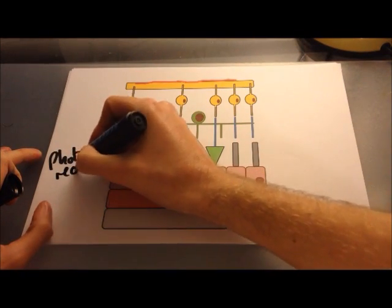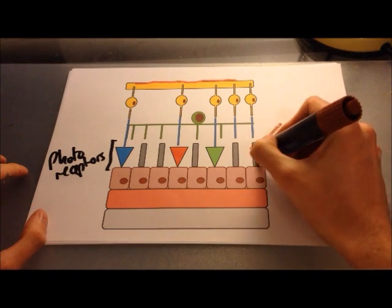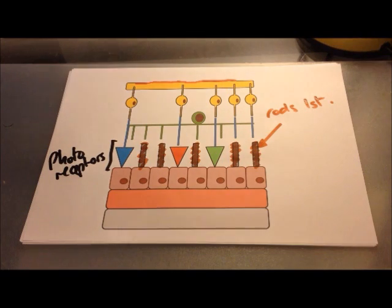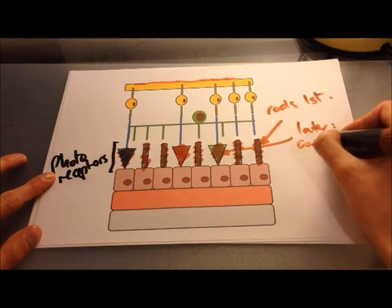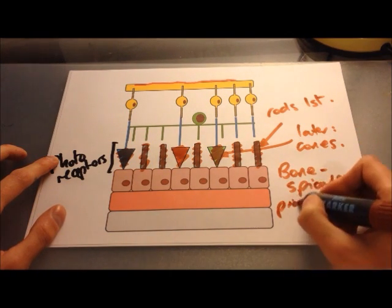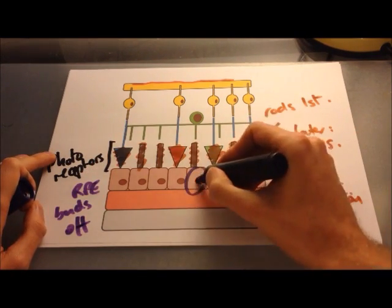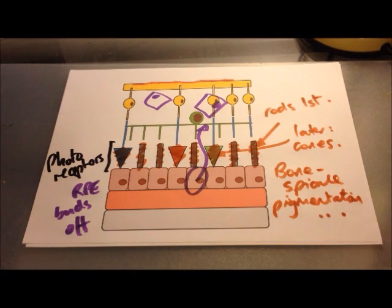In retinitis pigmentosa, mutations cause degeneration of photoreceptor cells — usually rods are affected first. Rod cells are responsible for vision in dim light, so their loss leads to nyctalopia — impaired night vision. Loss of cone cells, affecting colour vision and day vision, occurs later. A pathognomonic sign is bone spicule pigmentation, thought to be caused by retinal pigment epithelium cells budding off and settling in the neural retina, forming these characteristic pigmented bone spicule-shaped lesions.